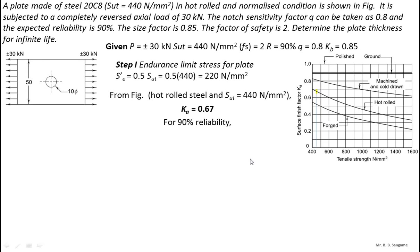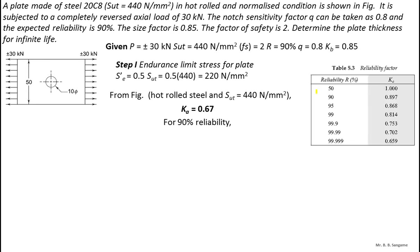Next, for the reliability factor, I refer to the reliability factor chart, which is called kc. We already have the size factor kb = 0.85 and surface finish factor ka = 0.67. For a reliability of 90%, from the chart, kc = 0.897.